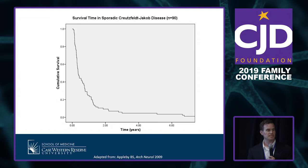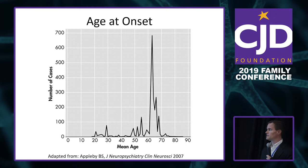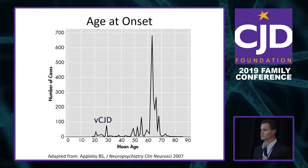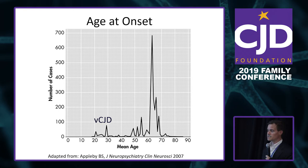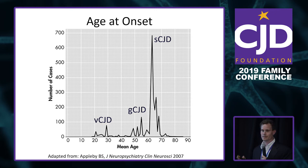Unfortunately, prion disease is a rapidly progressive disease. Most people will pass within a year; only about 20% of people with sporadic CJD live longer than a year, and most pass within four to six months of symptom onset. It tends to be a disease of mid to late life. Different types show different age patterns: variant CJD in people in their 20s and 30s, genetic CJD more in midlife, and sporadic CJD in mid to late life — though these are just averages, with sporadic cases ranging from age 14 to 104.